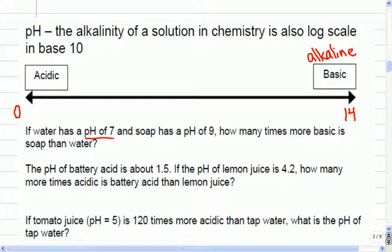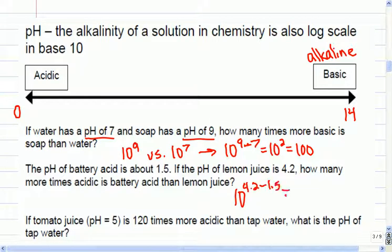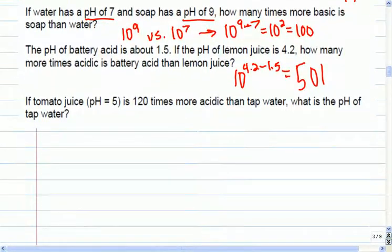In this instance, we can see the pHs. If I want to compare them, it's going to be 10 to the 9 versus 10 to the 7, so 100 times more basic. Battery acid has a pH of about 1.5. If the pH of lemon juice is 4.2, how many times more acidic is battery acid than lemon juice? Just a little more than 501. So 4.2 minus 1.5, and we'd have about 501.